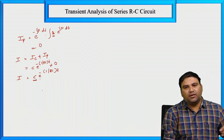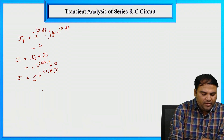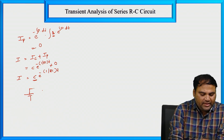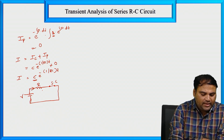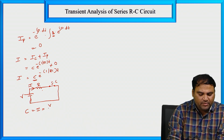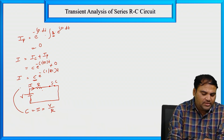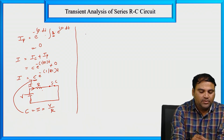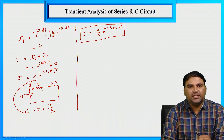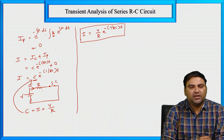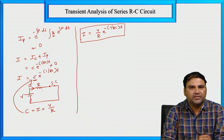Now we have to calculate the constant C. For the series RC circuit, the capacitor acts as a short circuit initially, so the constant C equals I equal to V divided by R. Substituting this C value, the final current response is I equal to V by R into e to the power of minus 1 divided by RC into T — this is the total current response of the given RC circuit.